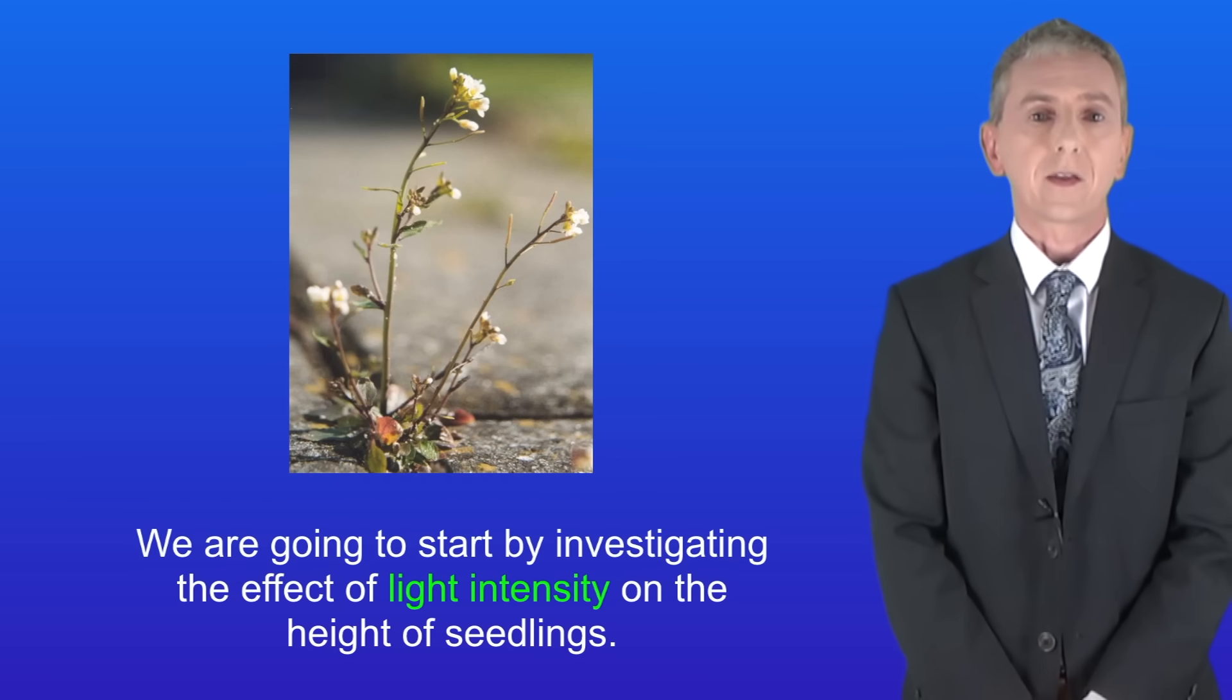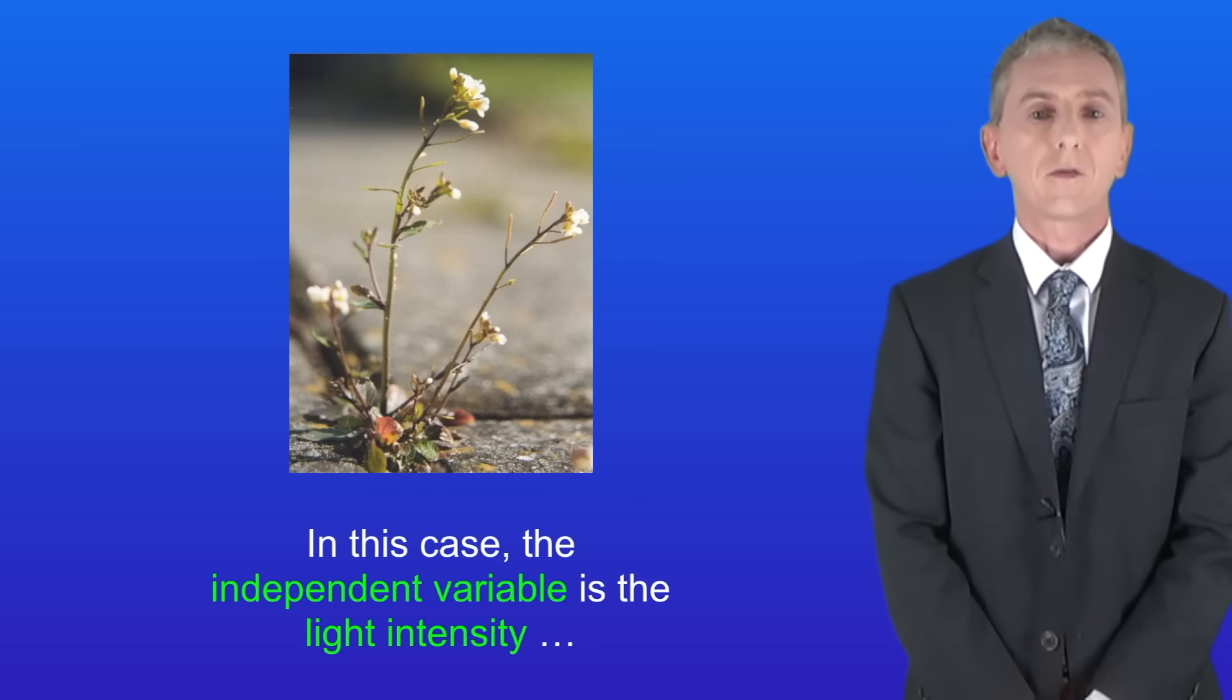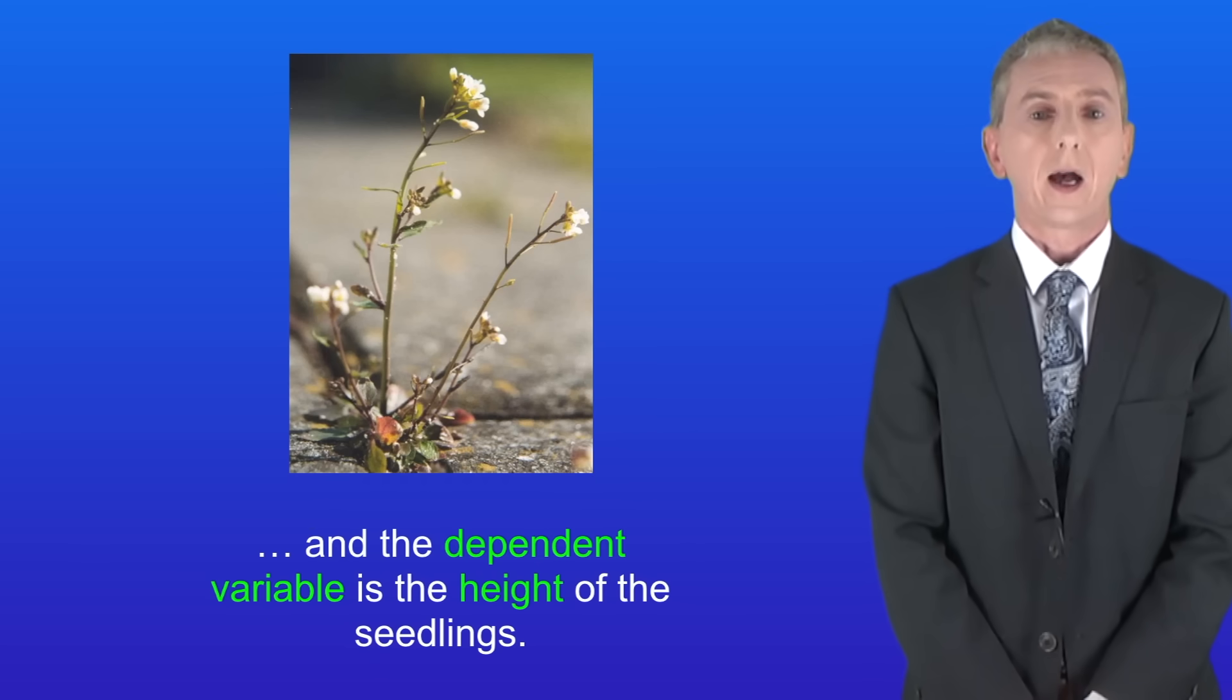We're going to start by investigating the effect of light intensity on the height of seedlings. So in this case the independent variable is the light intensity and the dependent variable is the height of the seedlings.